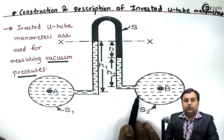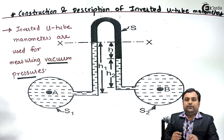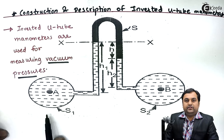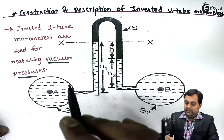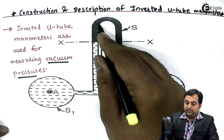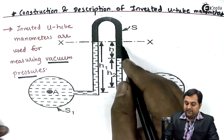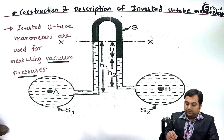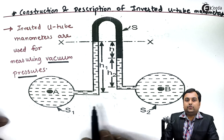As we can see here, we have two different pipelines — pipeline A and pipeline B — both containing liquid which has pressure below atmospheric. So if we want to measure the pressure difference between two different pipelines, we can use an inverted U-tube manometer as shown in the diagram.